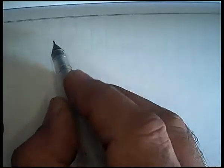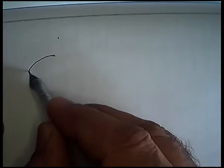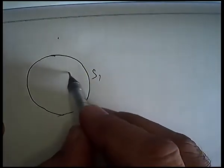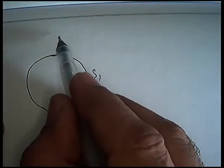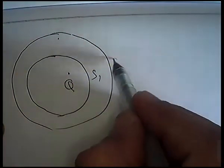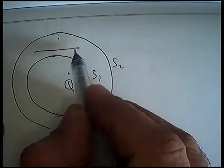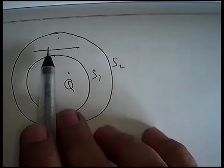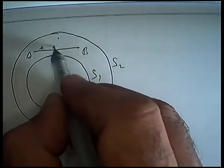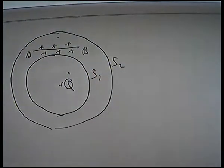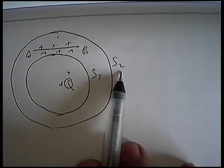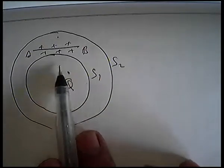Question में आपको given है दो sphere. एक sphere S1 है और इसके अंदर charge है q. दूसरा sphere S2 है जिसके बाहर एक line AB है जिस पर भी charge है. आपको find करना है sphere S1 और sphere S2 से कितना flux linked है.